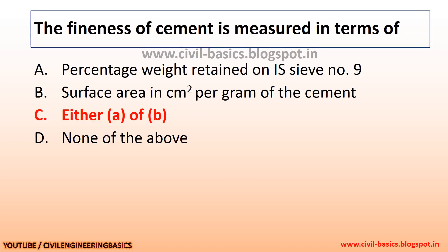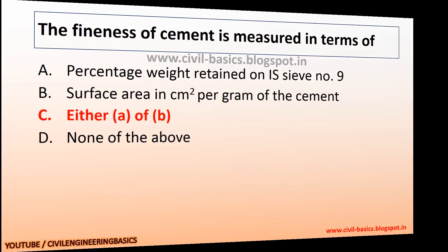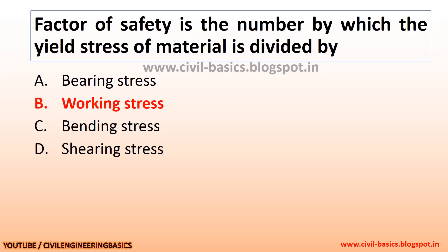The fineness of cement is measured in terms of percentage weight retained on IS sieve number 9, and also in terms of surface area. Factor of safety is the number by which the yield stress of a material is divided by the working stress.